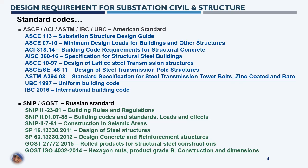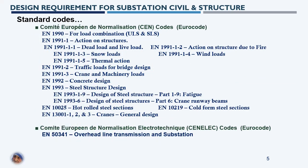SP 16 and SP 63 are Russian design codes for steel and reinforced concrete structures respectively. GOST 2772 is for rolled structural steel construction. ISO 4032 / GOST covers hexagonal nuts and products of grade B, providing construction and dimension standards for hexagonal bolts in Russian projects. For European standards, EN 1990 covers general structure design and calculations, including load combinations — ULS (Ultimate Limit State) and SLS (Serviceability Limit State) — with combination factors per European requirements.